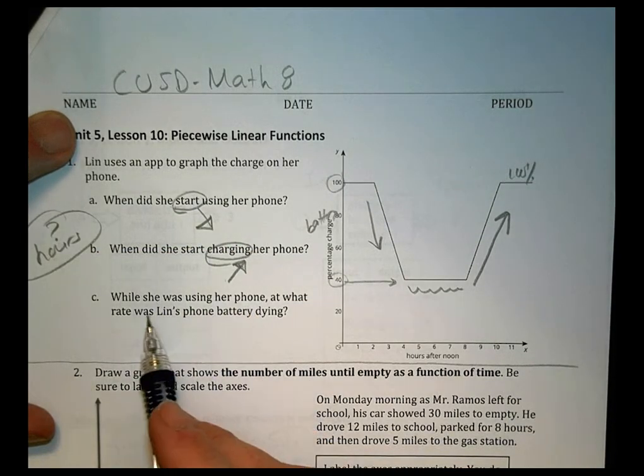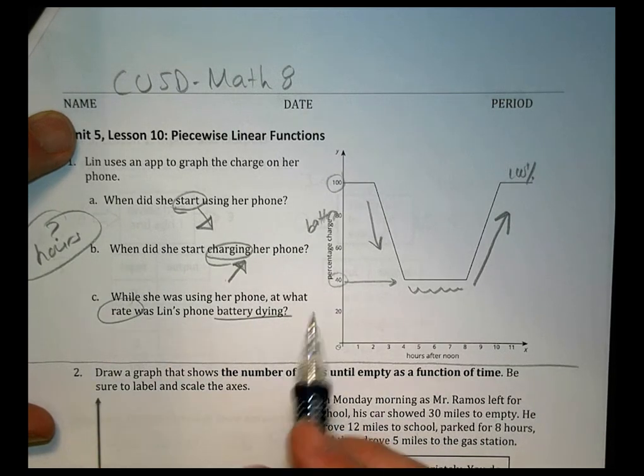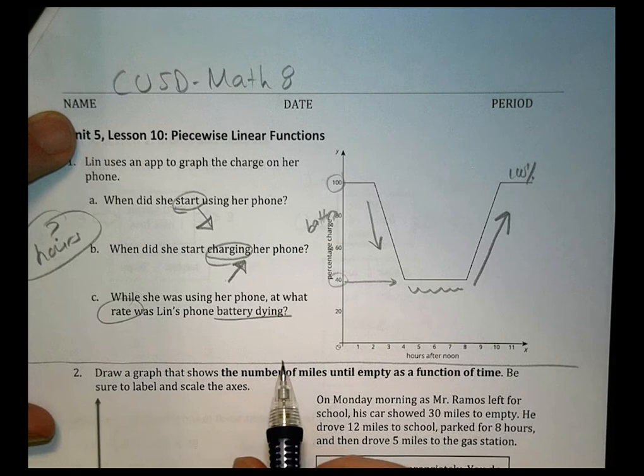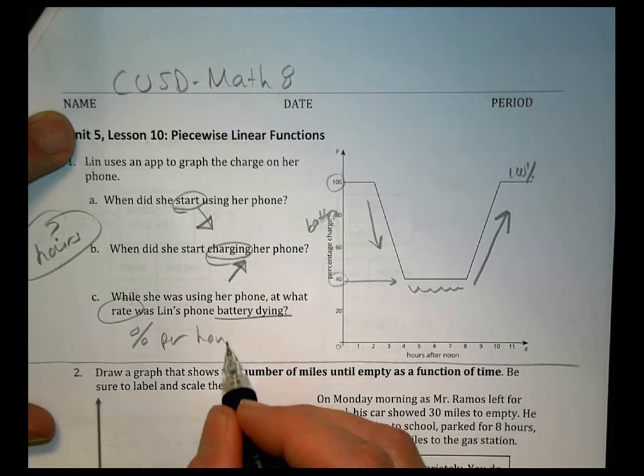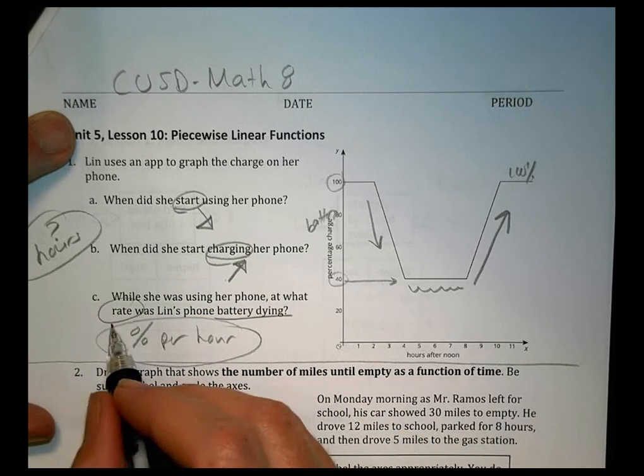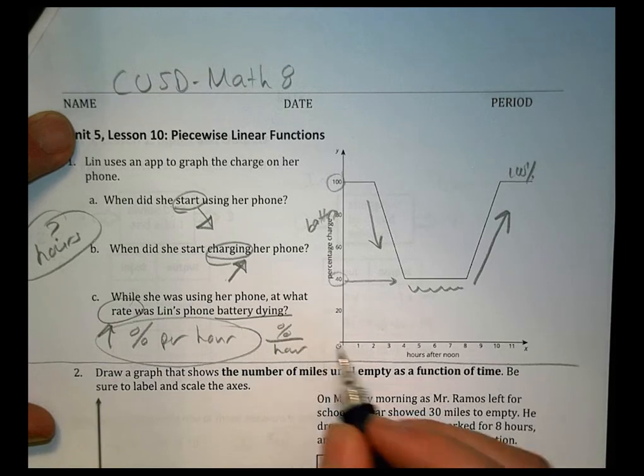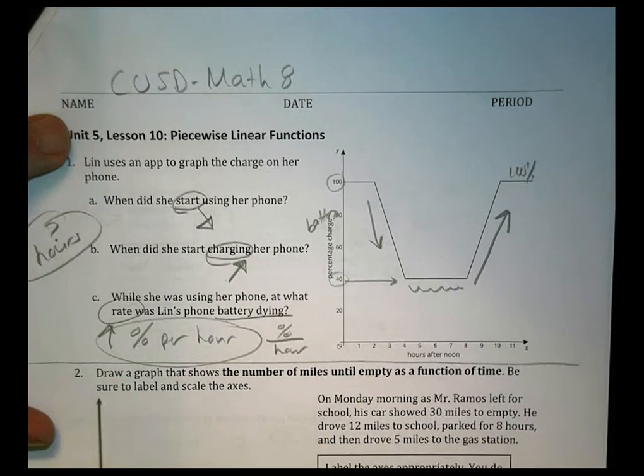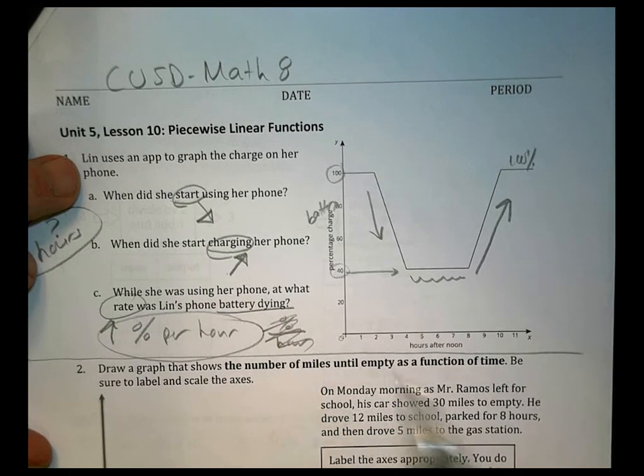When you start charging your phone, you would expect to see the battery life percentage start to go up at that point there. So you need to figure out where that is happening in the graph there based upon, again, an hour. So what hour is it taking place at? While she was using her phone, at what rate was Lynn's phone battery dying? So rate's going to be, when you talk about a rate, you're talking about how much percent per hour is the rate.